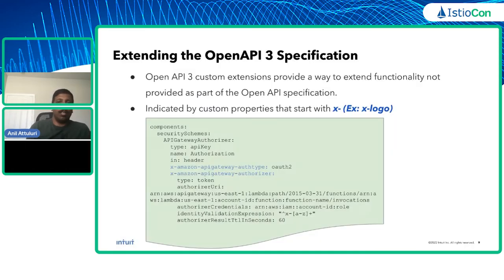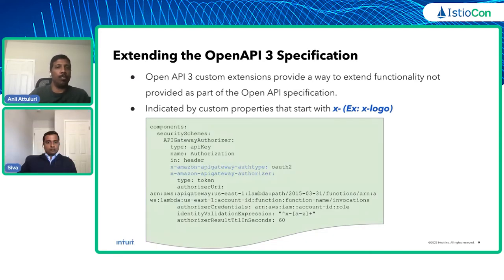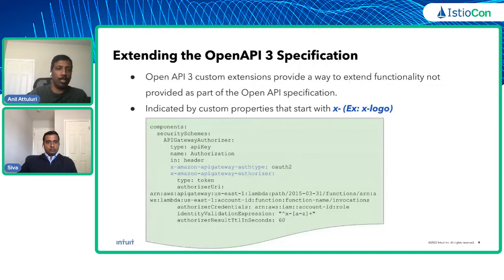There is something called custom properties in the OpenAPI 3 specification. Any time you want to extend the functionality of the OpenAPI specification, you can use custom properties that start with 'X-'. An example highlighted here is X-Amazon-API-Gateway-auth-type and X-Amazon-API-Gateway-authorizer. This is the component section of the OpenAPI spec that configures a custom authorizer for a REST API behind Amazon's API Gateway.